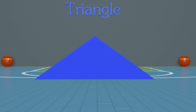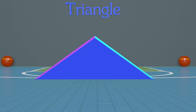Now how about this shape? It looks a lot like the other shape, but it's more squished. Is this still a triangle? Well, let's count the sides and angles and see. We have one, two, three sides and one, two, three angles — three sides and three angles. That means that it is a triangle. Great job, guys!